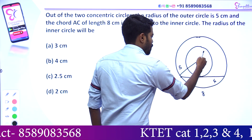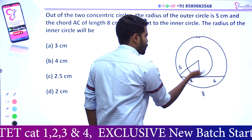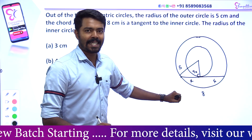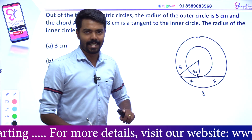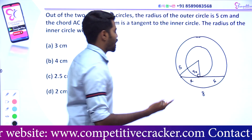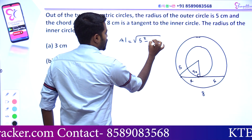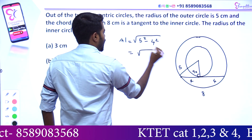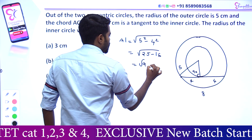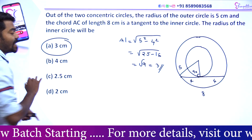We have the radius of the inner circle. The angle between the radius and the tangent of the given circle is 90 degrees. In the right-angle triangle, it is the hypotenuse. The base of the values: using Pythagoras — hypotenuse square minus altitude square — we get the answer to the root. So, the answer is option A: 3cm.